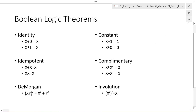Some other Boolean logic theorems to keep in mind: the identity theorem. If we take any value and OR it with 0, we get the value back — 0 OR 0 is 0, 1 OR 0 is 1. And 0 AND 1 is 0, 1 AND 1 is 1. So any time you see a variable ORed with 0, you can remove it. Any time you see AND with 1, you can remove it.